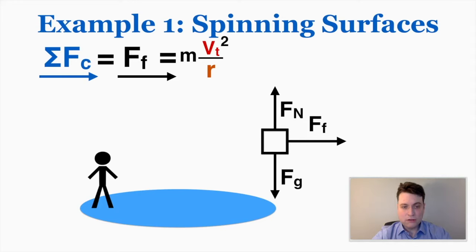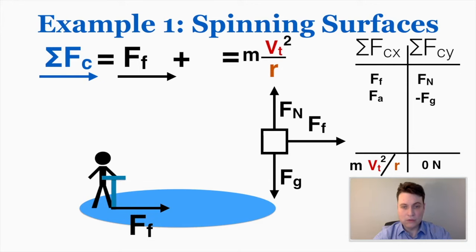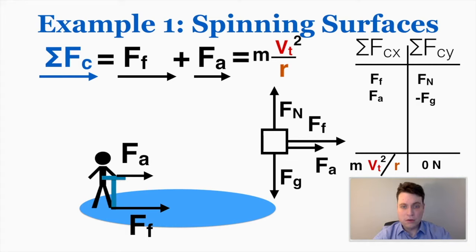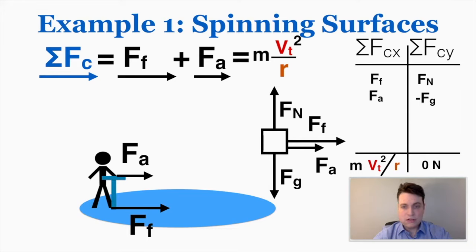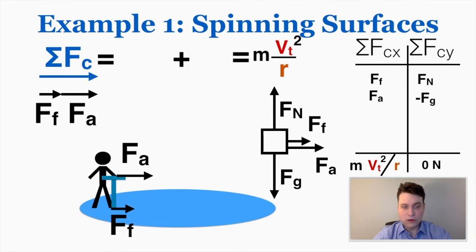Now let's say this person has something to hold onto as they spin around — a bar. If they're holding onto the bar, that bar is helping them stay in the circle, and the bar applies the same force back on them, which I'd call the applied force. So now there are two forces pointing toward the center of the circle: the force of friction and the applied force, and they're both adding together to make mv squared over r. If the circle spins at the same rate, the sum of these two forces still equals that same mv squared over r, so the force of friction must be smaller when the applied force helps out.